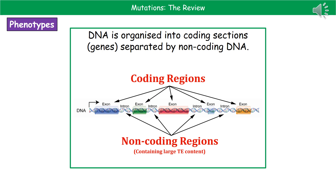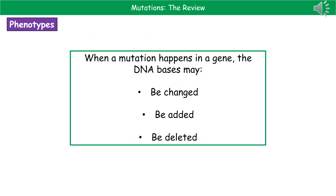Looking at this in more detail: when we consider the structure of DNA, not every section of the DNA molecule actually codes for proteins. The coding sections — the genes — are separated by non-coding DNA, as shown in the diagram. You just need to know that DNA has coding sections (the genes) and they're separated by non-coding DNA. When a mutation takes place within a gene, the DNA bases can have three effects.